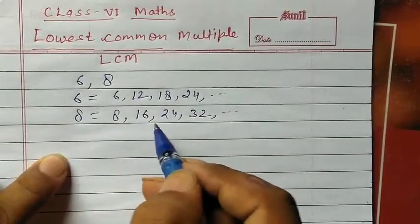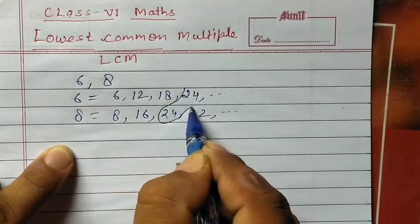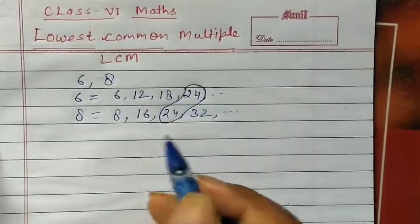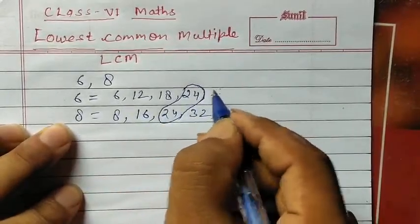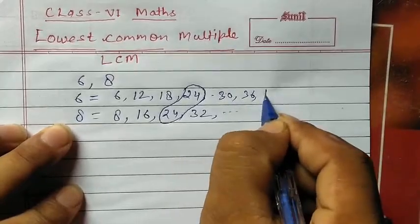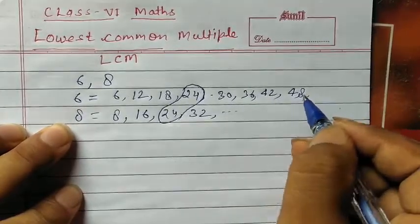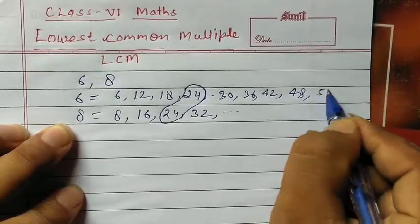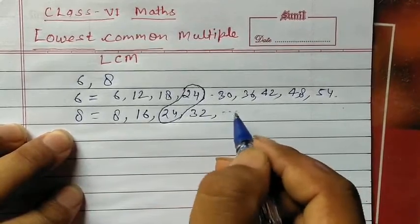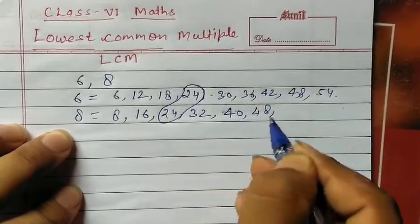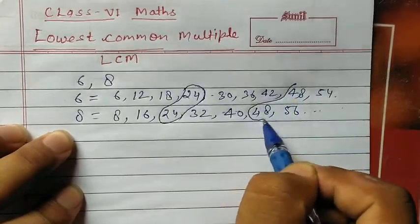Here look at the common ones. 24 is common. Extending further: 6's multiples continue as 30, 36, 42, 48, 54, and 8's multiples continue as 40, 48, 56. We can see 48 is also common, but...